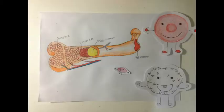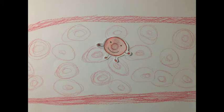First, I was at the red bone marrow with all my siblings, white blood cells and the platelets. Then, I got pushed out of the red bone marrow to join the bloodstream along with many other blood cells.